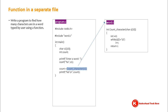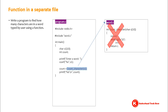What happens if the computer is not able to find the file what.c? Remember, it is in the file what.c where it is defined what should happen when you call the function. So if the computer is not able to find this file, very simply, when you call the function, nothing will happen.